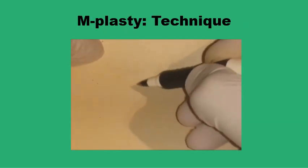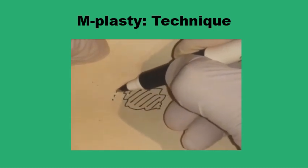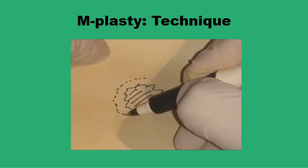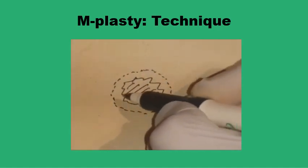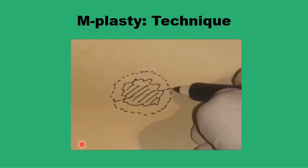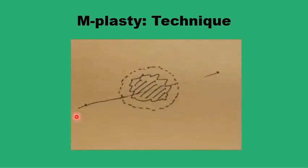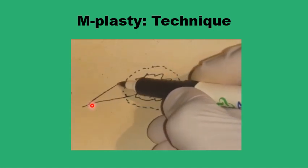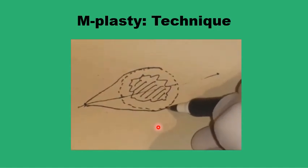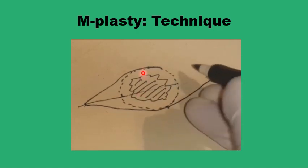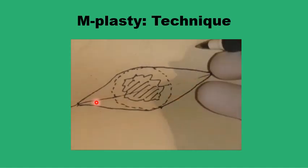The M-plasty starts with drawing the standard elliptical or fusiform excision of the wound that you would otherwise do. The lesion together with a safety margin is marked, and then you take equal lengths along the long axis of the ellipse. That should be three-to-one length to breadth, with an acute angle at the apex less than 30 degrees.